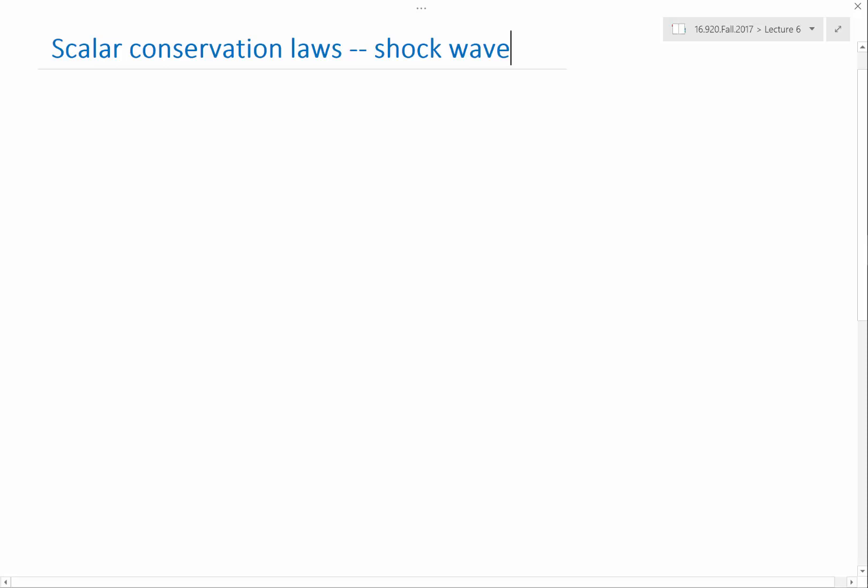So, conservation law, from a physical perspective, is written not as a point value problem, but as a domain, a volume problem. You have to first define the control volume. And if you have a conservation law, the law should work regardless of what control volume you choose. So, a conservation law written in physical terms is for any control volume, omega.